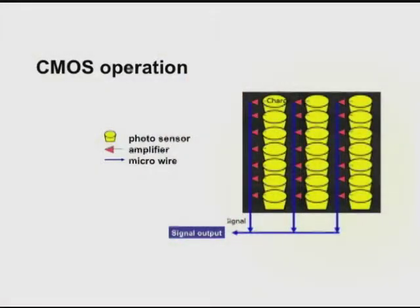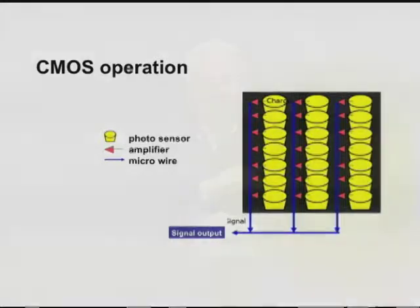The CMOS operates in a different way than the CCD. It captures every pixel at a time and then that information is read out. Basically it operates exactly like a memory card where you can read every bit.